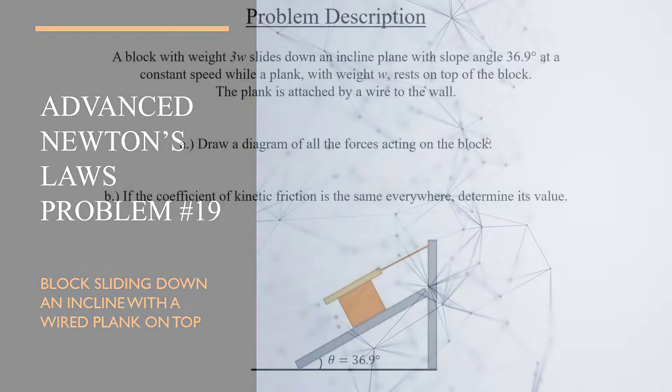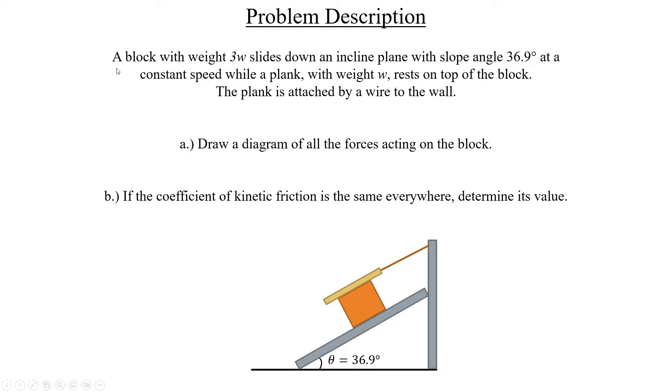So let's see how this one operates. Here we have a block with weight 3w sliding down an incline plane with slope angle 36.9° at a constant speed, while a plank with weight w rests on top of that block. And as you can see here, the plank is attached by a wire to the wall.